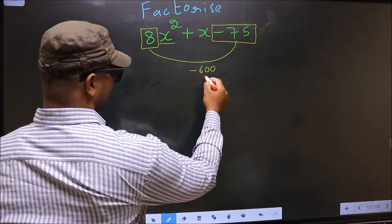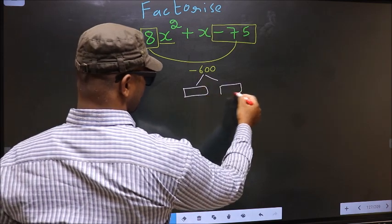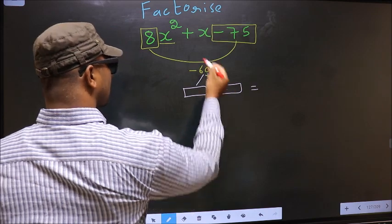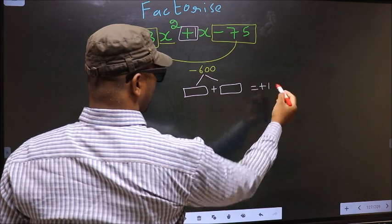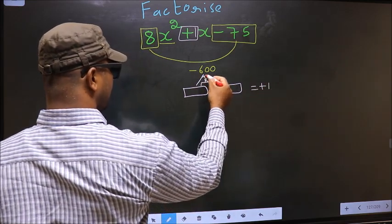Next. Now you should look out for 2 numbers such that when you add these 2 numbers, you should get middle coefficient plus 1 and also when multiplied, you should get minus 600.